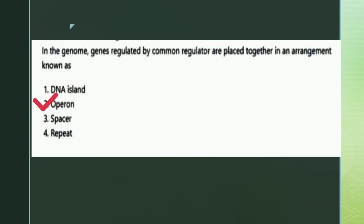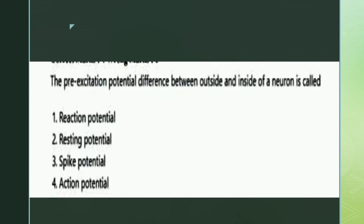The right answer is option two: operon. The next question: the pre-excitation potential difference between the outside and inside of a neuron is called what? The options are reaction potential, resting potential, bias potential, and action potential.